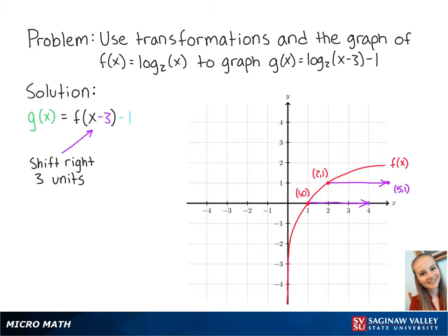So our points are now (5,1) and (4,0). Also notice that the asymptote on the y-axis also shifts 3 units to the right. So connecting our points, we get the graph of f(x-3).